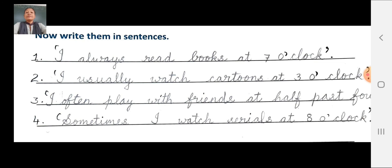Third number: 'I often play with friends at half past four.' After writing the sentence, put a single inverted comma, then a full stop. Fourth number: 'Sometimes I watch serials at eight o'clock.' After the sentence, put a single inverted comma, then a full stop.